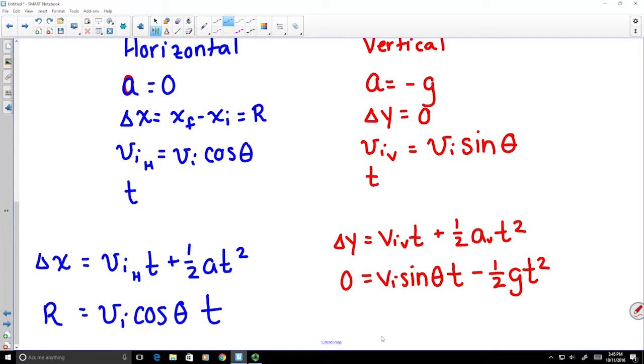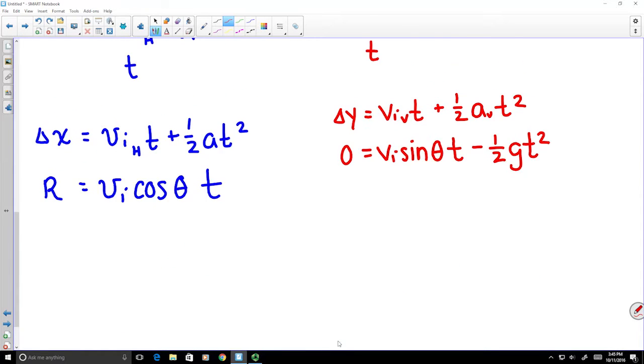We want to solve this equation for t. By doing our algebra here, we can get an expression for t of 2 times Vi sine theta over g.